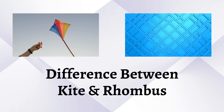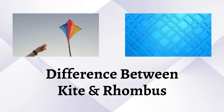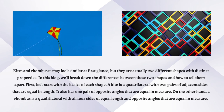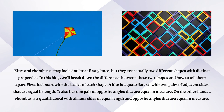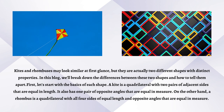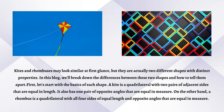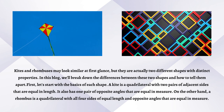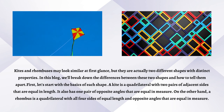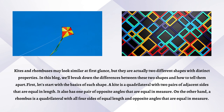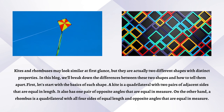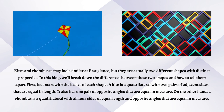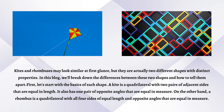Kites and rhombuses may look similar at first glance, but they are actually two different shapes with distinct properties. In this blog, we will break down the differences between these two shapes and how to tell them apart. First, let's start with the basics of each shape.